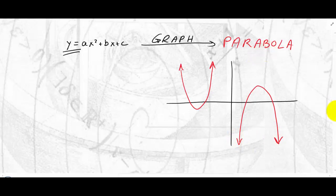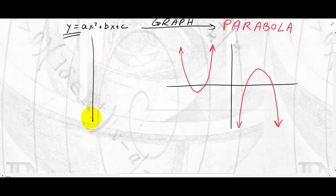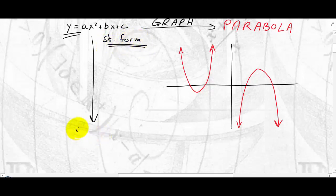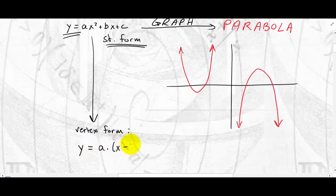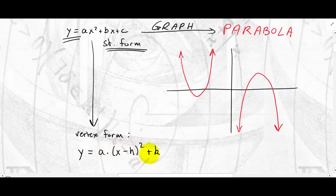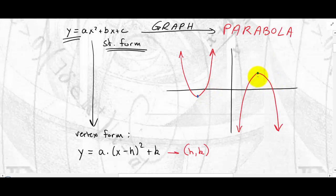There is another way to write a quadratic equation called the vertex form. The vertex form is written as y = a(x − h)² + k. It's called the vertex form because (h, k) is the vertex of the parabola — either the lowest point or the highest point, the tip of the parabola. In vertex form, h and k are read directly from the equation.